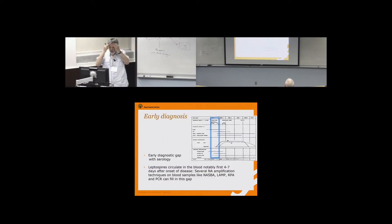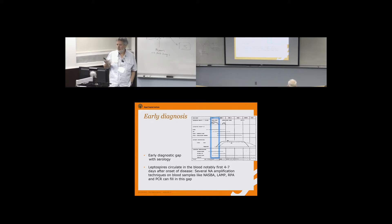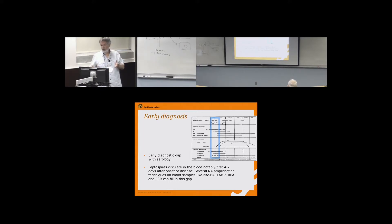For diagnostic purposes, antibiotic treatment must be started as early as possible — this is the diagnostic window where we need to make the diagnosis, and serology does not work in this window. What works here are current molecular tests: amplification tests like NASBA, LAMP, RPA — which is a very good technique — and PCR. We have PCR in diagnosis in our laboratory, and these can also be put into rapid test formats.